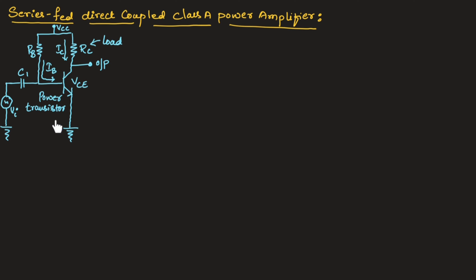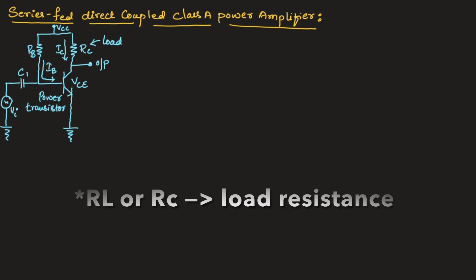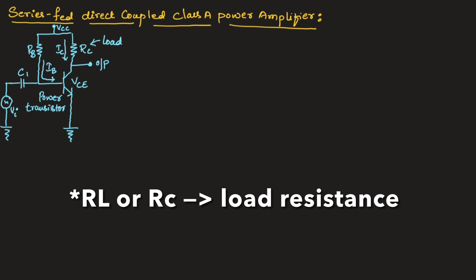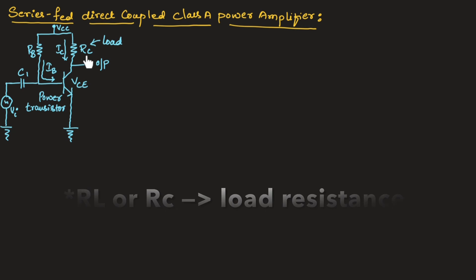A simple fixed bias circuit is shown in this figure. It is used to discuss the main features of class A series fed amplifier. Here, RL is the load that is connected in series with the collector, so the name is given as series fed amplifier.